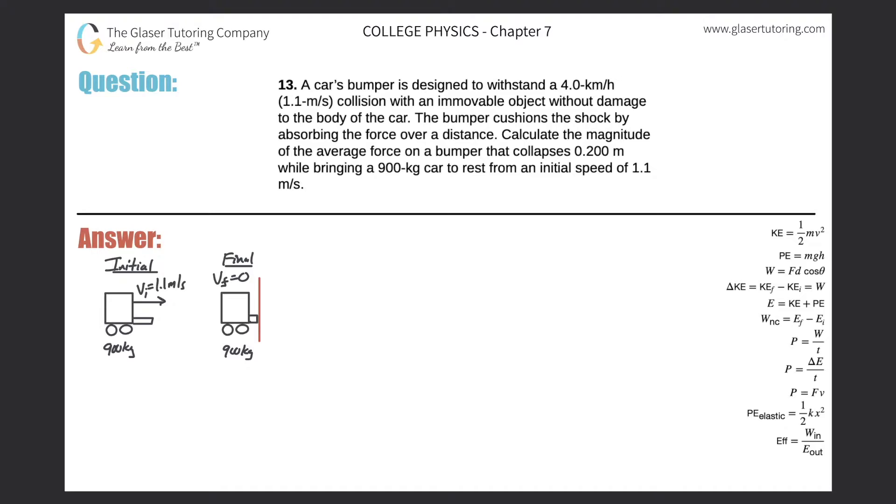Number 13. A car's bumper is designed to withstand a 4 kilometer per hour, which is 1.1 meter per second, collision with an immovable object without damage to the body of the car. The bumper cushions the shock by absorbing the force over a distance. Calculate the magnitude of the average force on the bumper that collapses 0.2 meters while bringing a 900 kilogram car to rest from an initial speed of 1.1 meters per second.